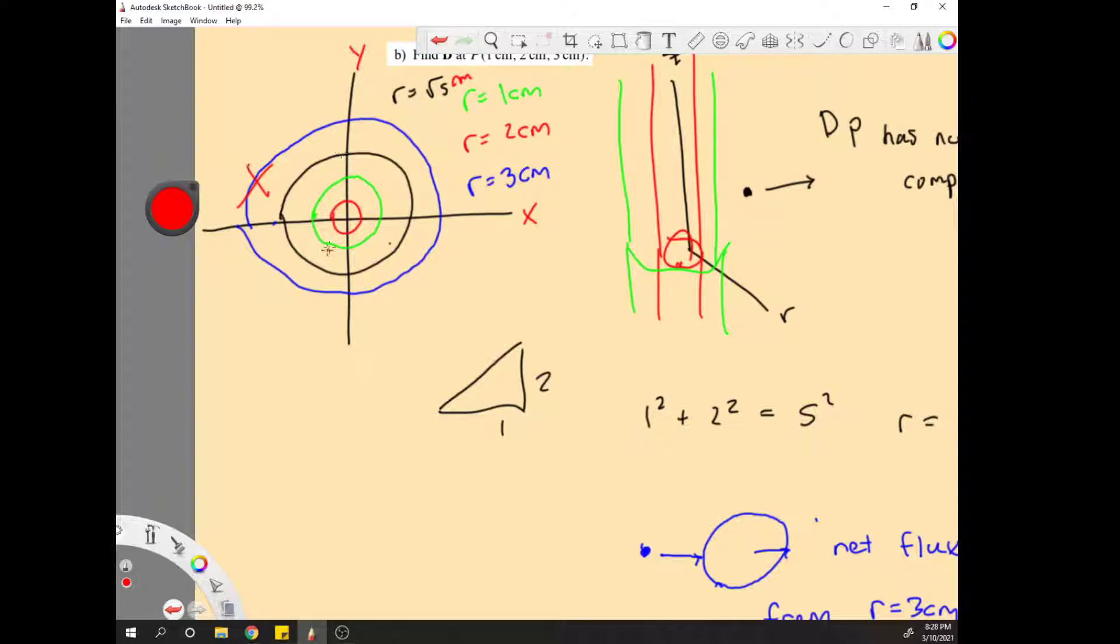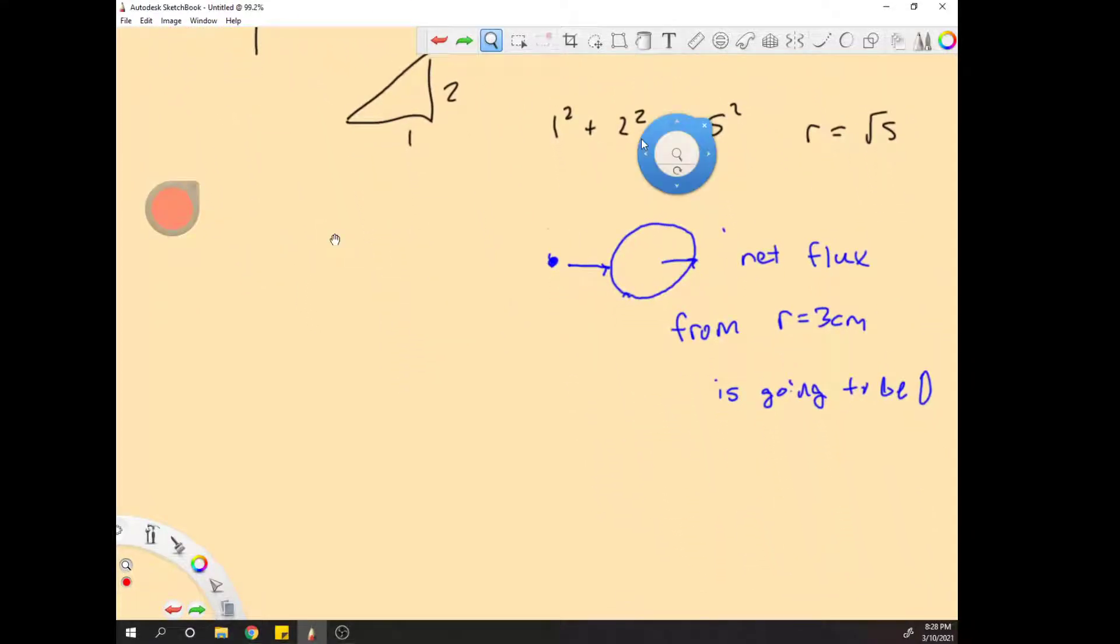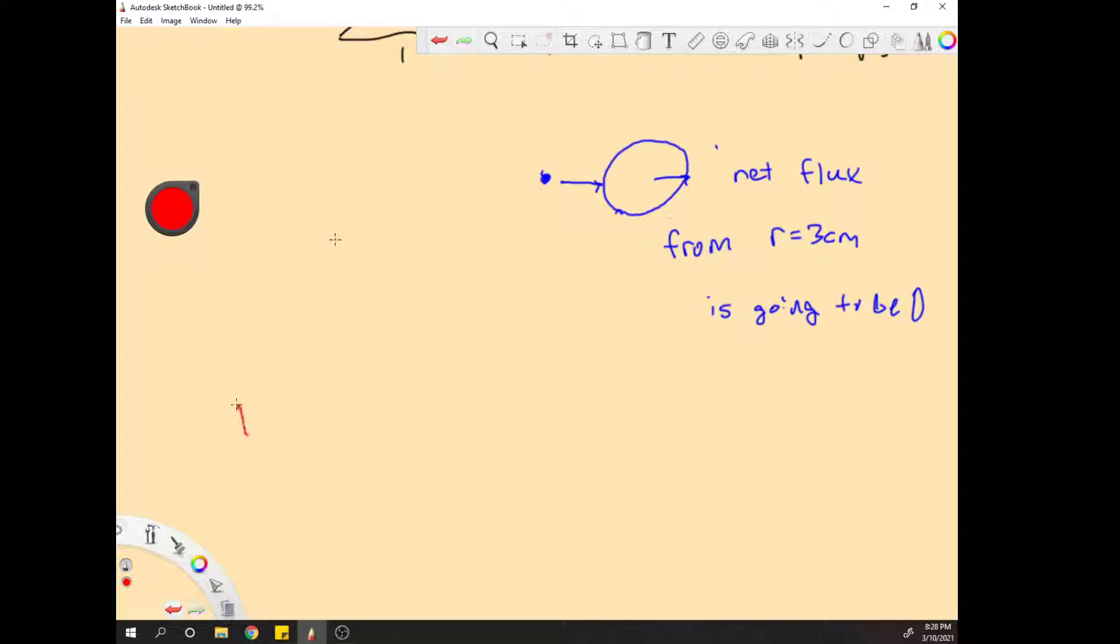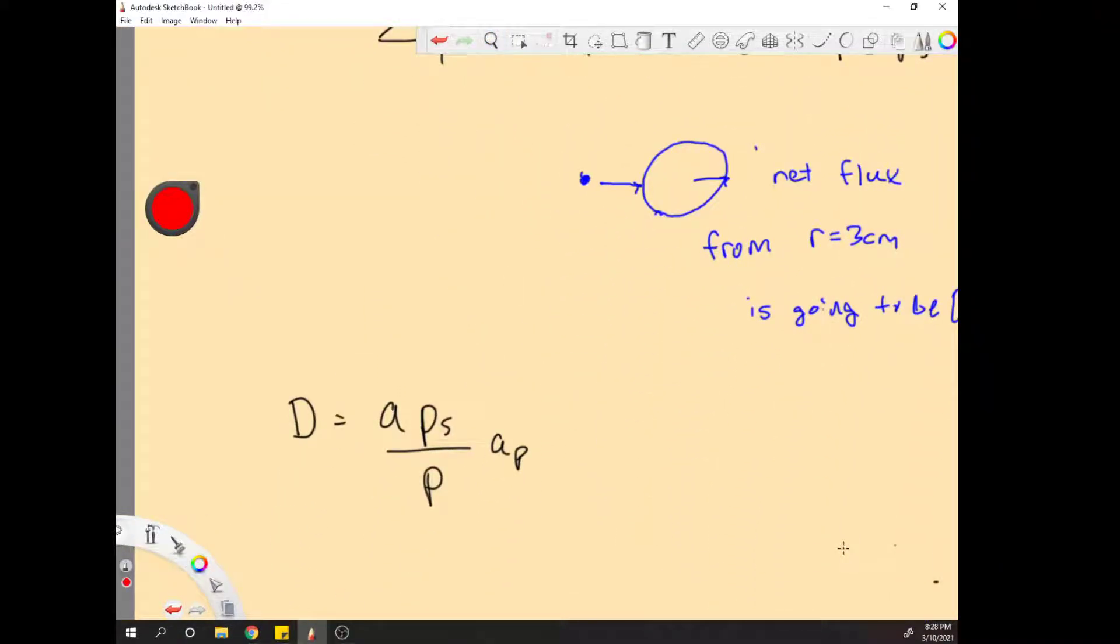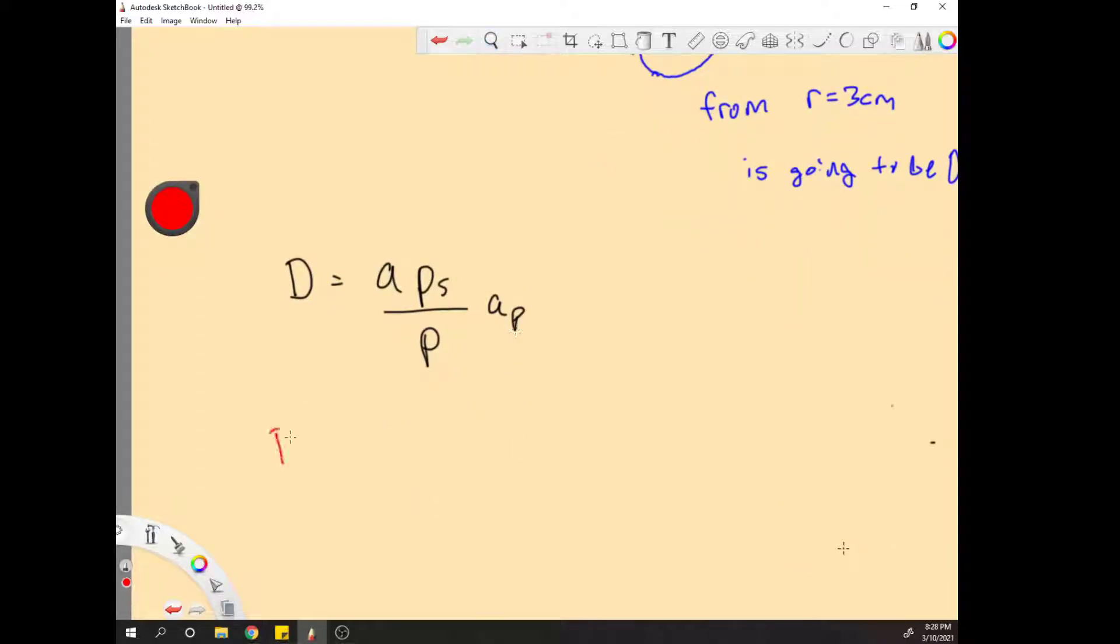So we need to find the charge of these two, and we need an equation to find the electric flux density of the two cylinders inside this r equals five. And that equation is D equals rho s over rho in the rho direction. So we know all these components, so let's start with the red one. D1 equals...